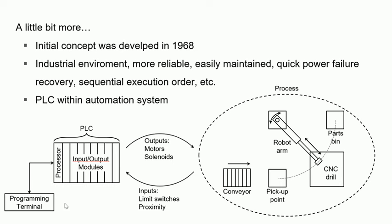A little more information: the initial concept of PLC was developed in 1968, which is a really long time ago. However, it is still widely used in industry because of several reasons. First, it is really reliable in the industrial environment and very easy to maintain, especially compared to personal computers. It also has a really quick power failure recovery — a PC takes roughly five to eight seconds to restart, whereas a PLC normally only takes one to three seconds. Another advantage is that it executes everything in a sequential order.